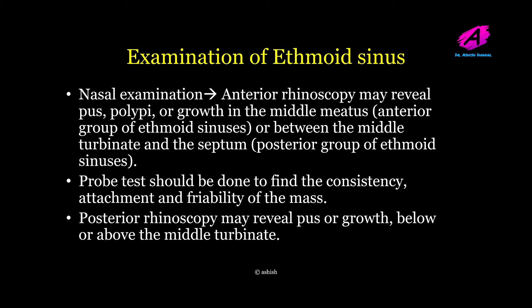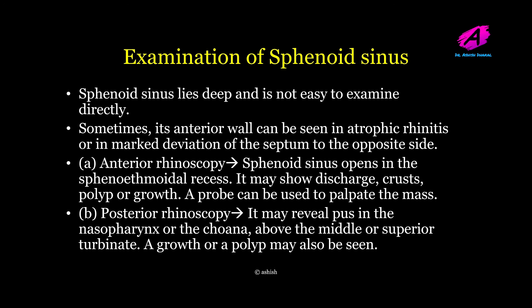On nasal examination, anterior rhinoscopy may reveal pus, polyp, or growth in the middle meatus, signifying the anterior group of ethmoid sinuses, or between the middle turbinate and the septum in the case of the posterior group. A probe test should be done to find the consistency, attachment, and friability of any mass. Posterior rhinoscopy may reveal pus or growth below or above the middle turbinate.